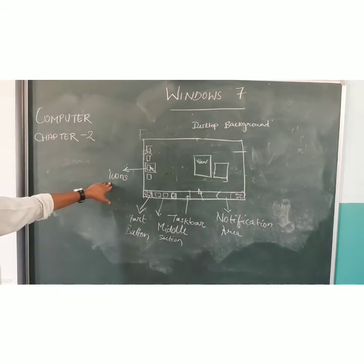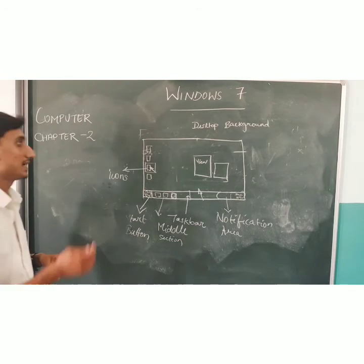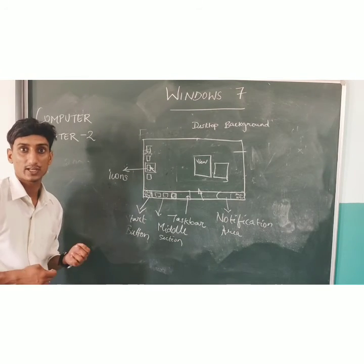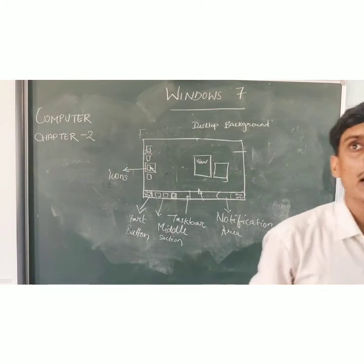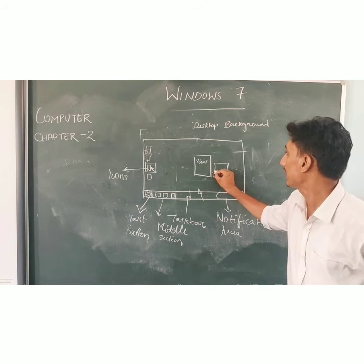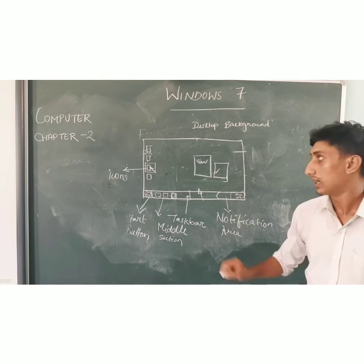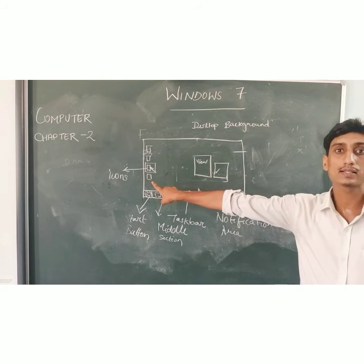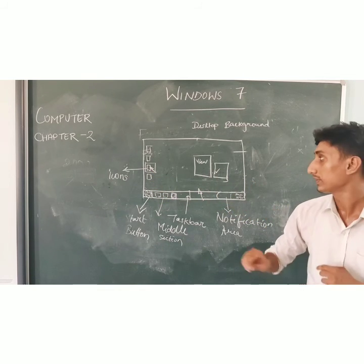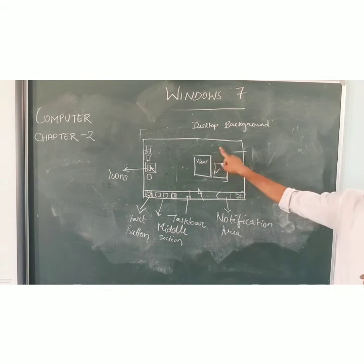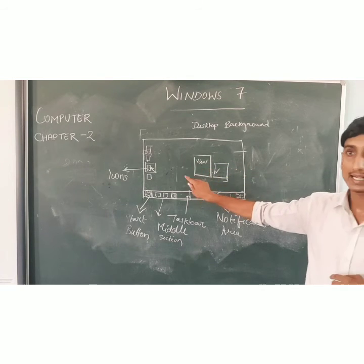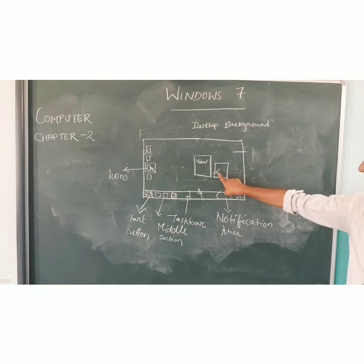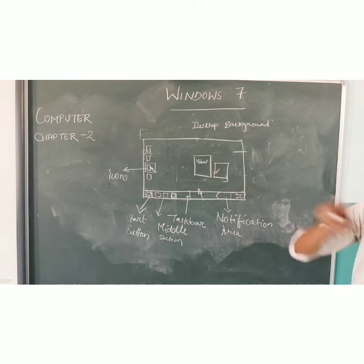You can hide desktop icons by right-clicking the desktop. Go to View, then click on Show Desktop Icons to remove the tick, and this will hide all desktop icons.